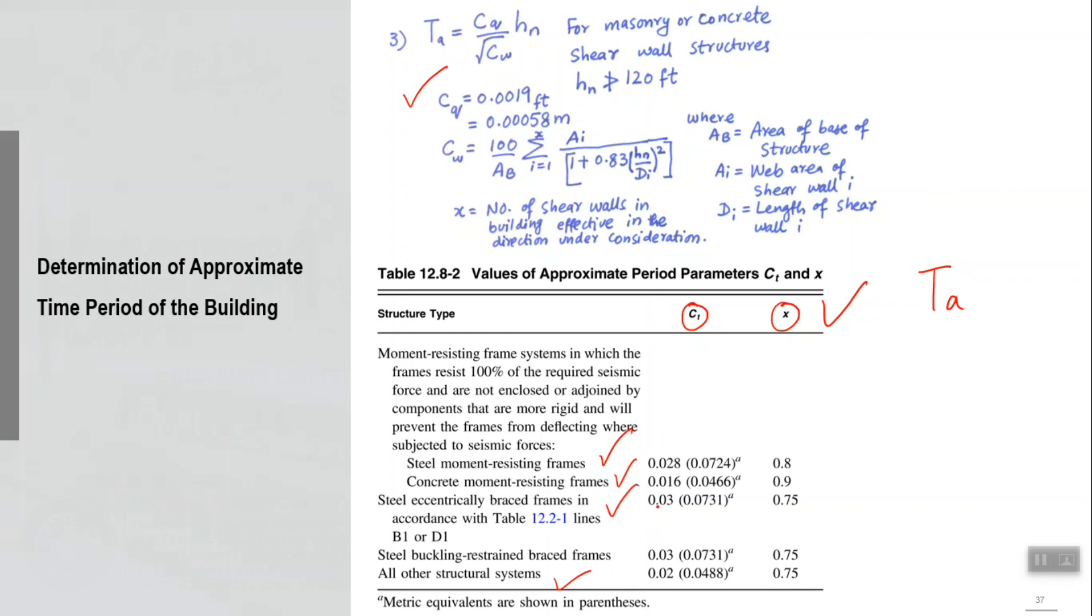The values in the parenthesis are in metric units; the other values are in US customary units. You can put that in the expression and get Ta.